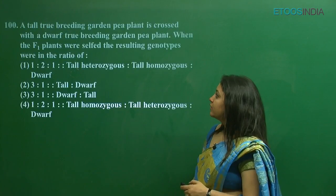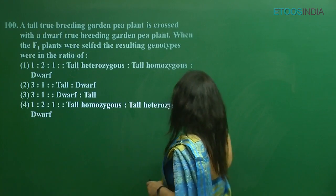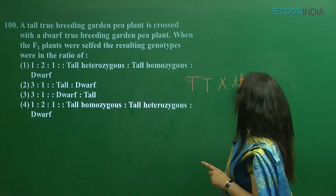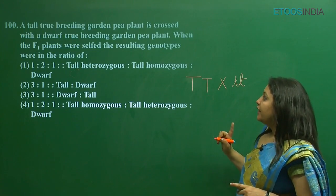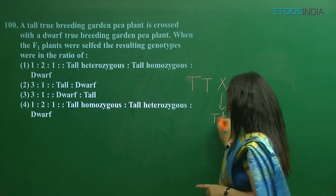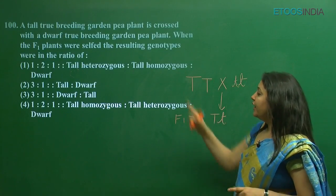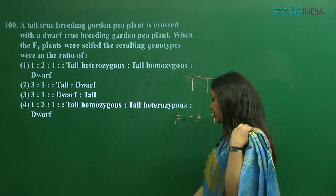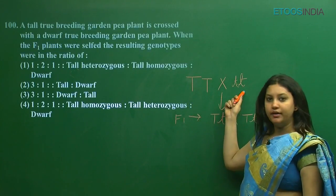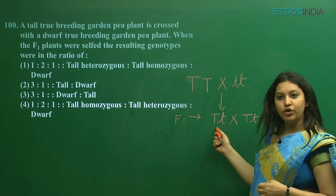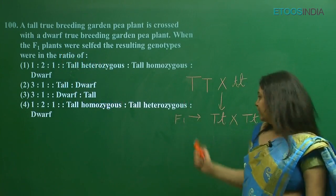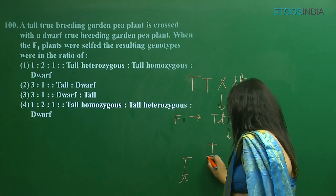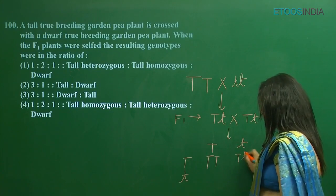The next question is: a tall true-breeding garden pea plant is crossed with a dwarf true-breeding garden pea plant. What is the F1 generation? Then the F1 plants are selfed. You have the pure tall plant and the pure dwarf plant. When you cross both, you get the first filial generation. What is the result when F1 is selfed?